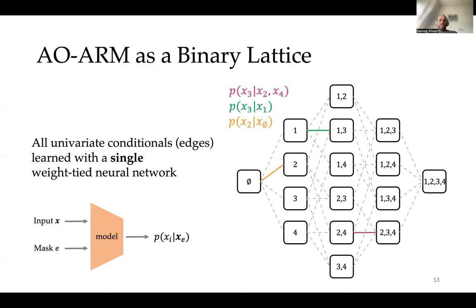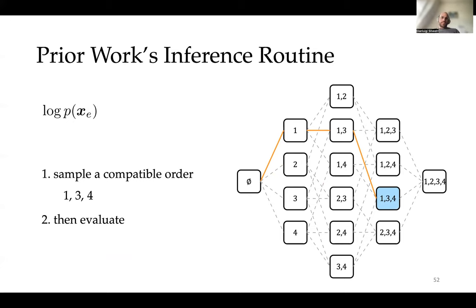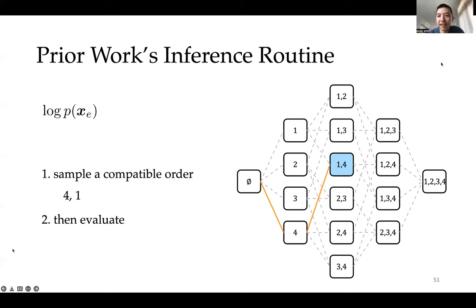Q: Is it guaranteed that different paths give the same marginal? A: Not guaranteed, but previous works studied how different the answers are, even adding regularization to enforce consistency. They found that in practice the answers are very similar regardless of path, so the conclusion was it doesn't really matter — people just pick one path and use it as their answer.